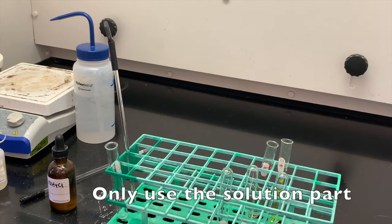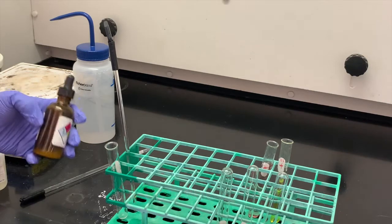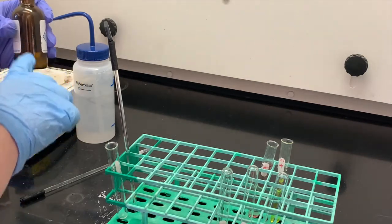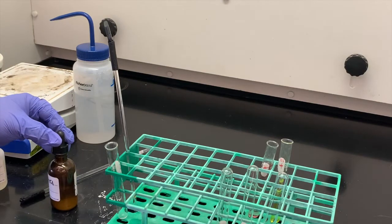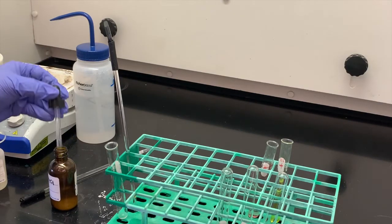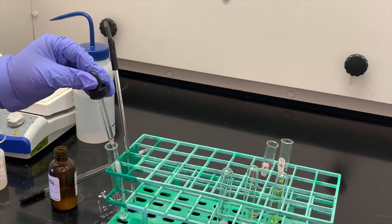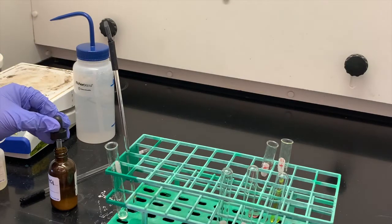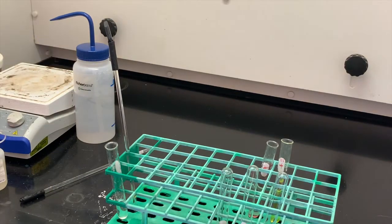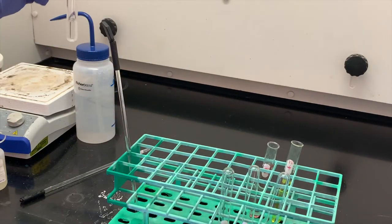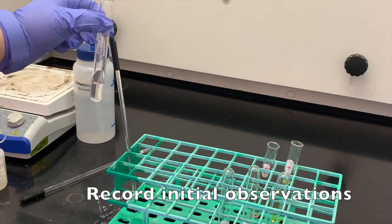So be careful with the dropper to only pick up the solution part, not pick up the solid. I'm going to add about two milliliters of that to my test tube. And then you want to record your observations for this ammonium chloride.